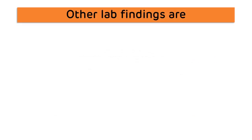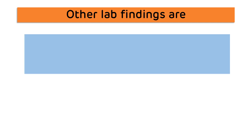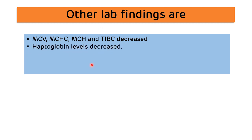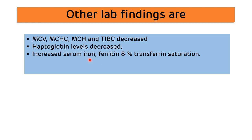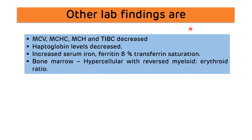Other lab findings in thalassemia include reduction in MCV, MCHC, MCH, and total iron binding capacity. Haptoglobin levels will be reduced. There will be an increase in serum iron, ferritin, and percentage of transferrin saturation. In bone marrow study, the bone marrow will be hypercellular with a reversed myeloid to erythroid ratio.